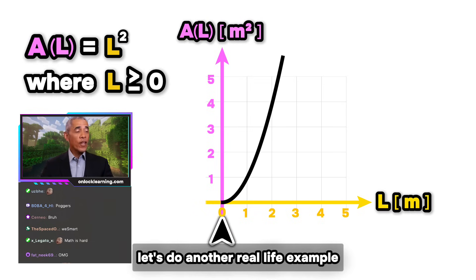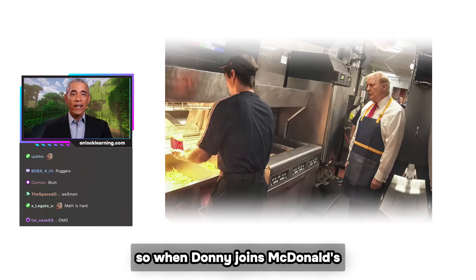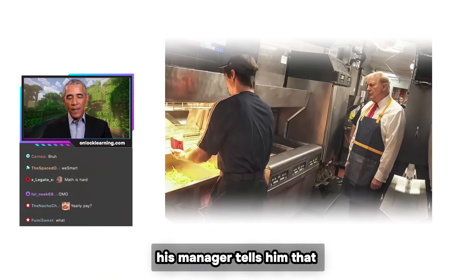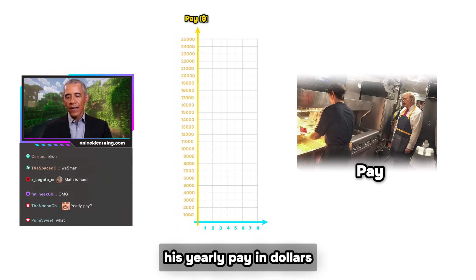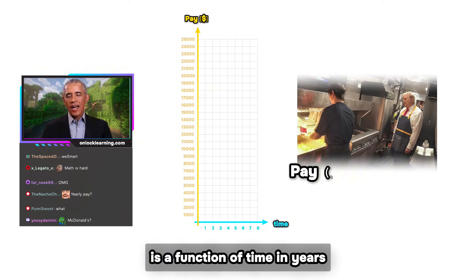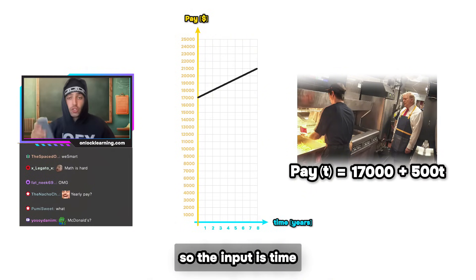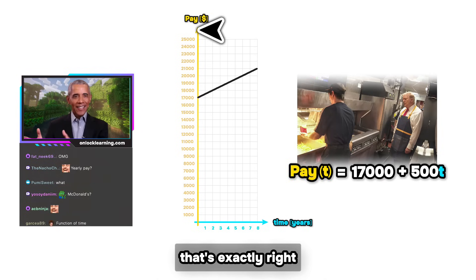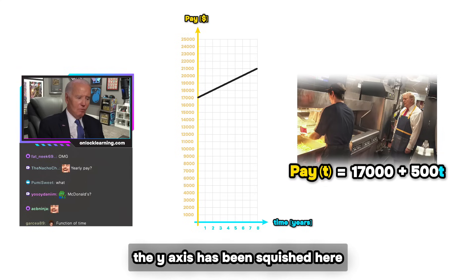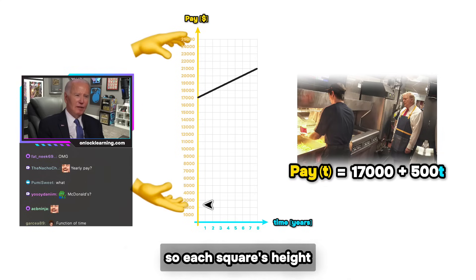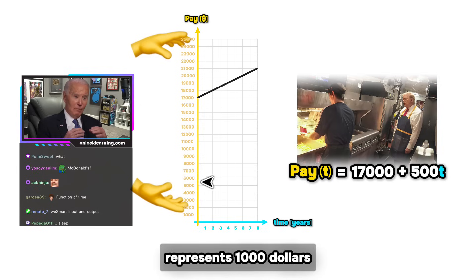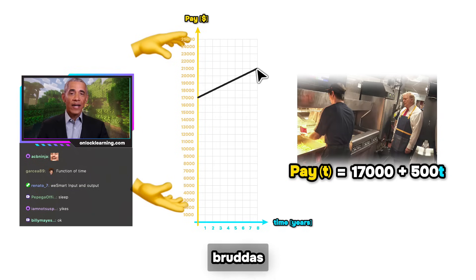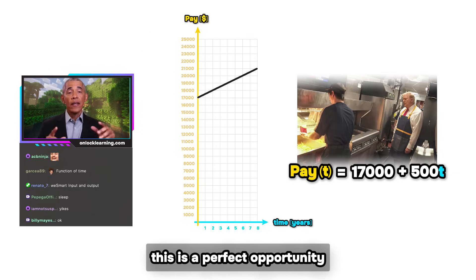Okay, let's do another real life example. So when Donnie joins McDonald's, his manager tells him that his yearly pay in dollars is a function of time in years. So the input is time and the output is his pay. That's exactly right, chat. Notice the y-axis has been squished here, so each square's height represents one thousand dollars. We did this so it's easier to see what's happening over time. Right, this is a perfect opportunity to go to differentiation.